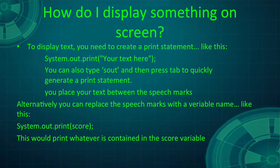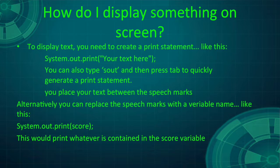To display text on screen, you need to create a print statement, like this. Rather than typing out the whole command, you can type S-O-U-T and then press tab. Then just type your text between the speech marks. Or, delete the speech marks and insert a variable name to print that variable.